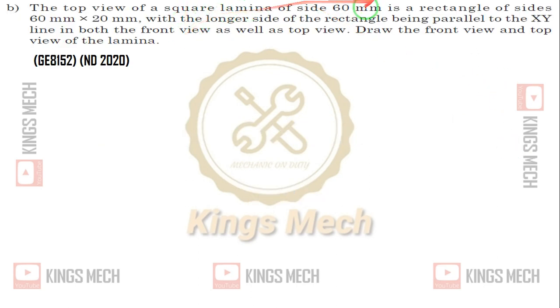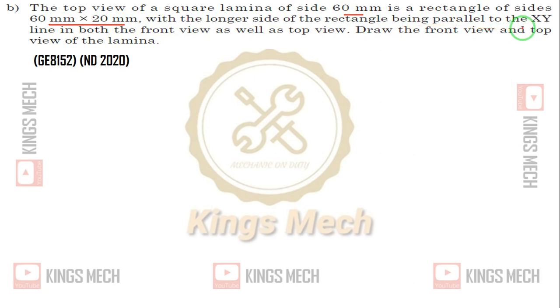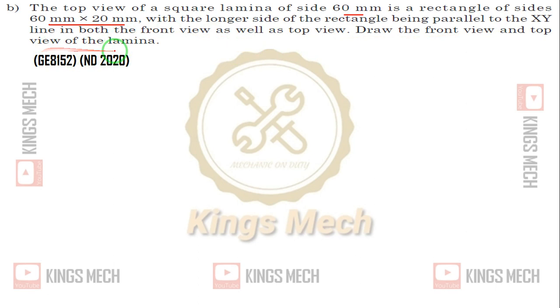The top view of a square lamina of side 60 mm is a rectangle of side 60 by 20, with the longer side of the rectangle being parallel to the XY line in both front as well as top view. Draw the front view and top view of the lamina.